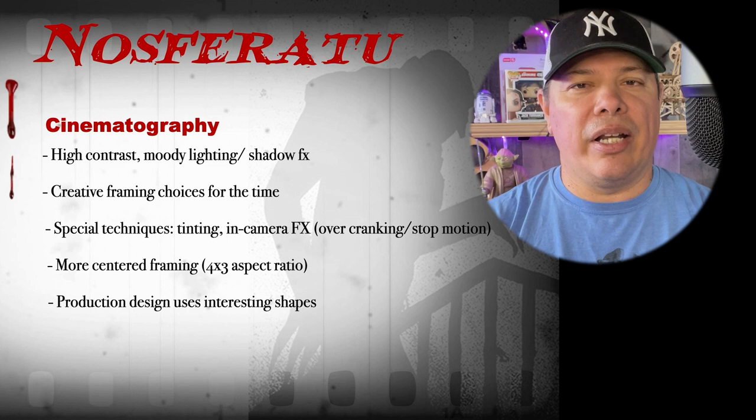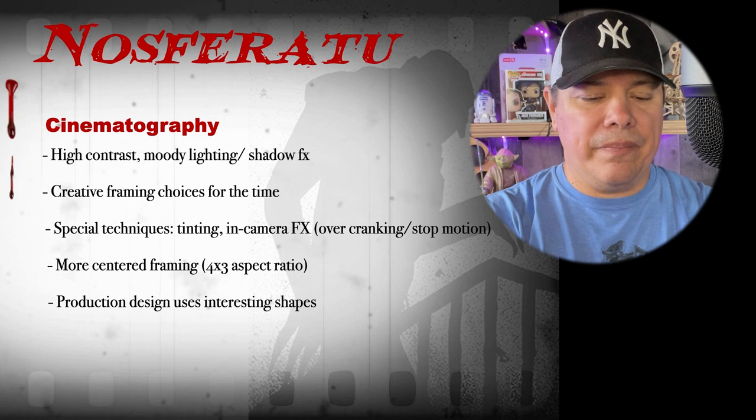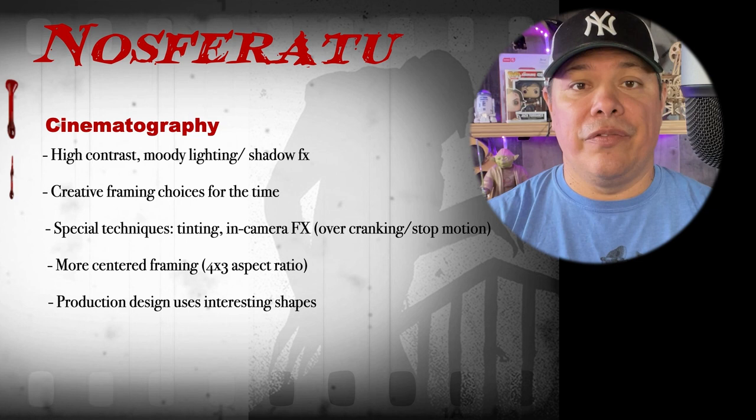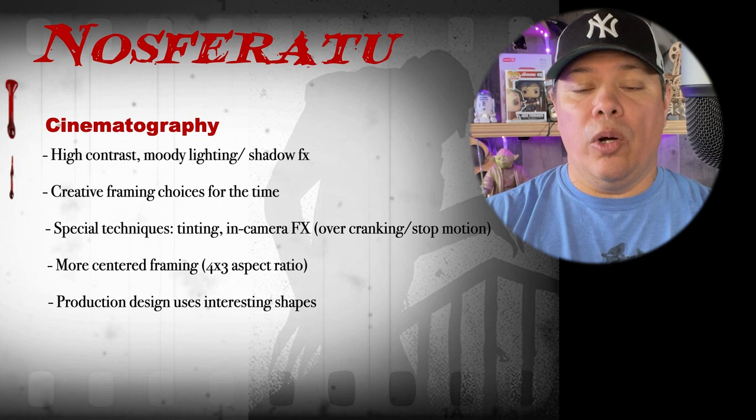Some special techniques they used in this movie: they tinted some of the footage so that you could tell the difference between when it was daytime, when it was nighttime, and when it was sunset. Back then, you couldn't shoot at night because the film wasn't sensitive enough, so everything had to be shot during the day with bright sunlight. Murnau took this idea of tinting the film to help people differentiate between day and night.